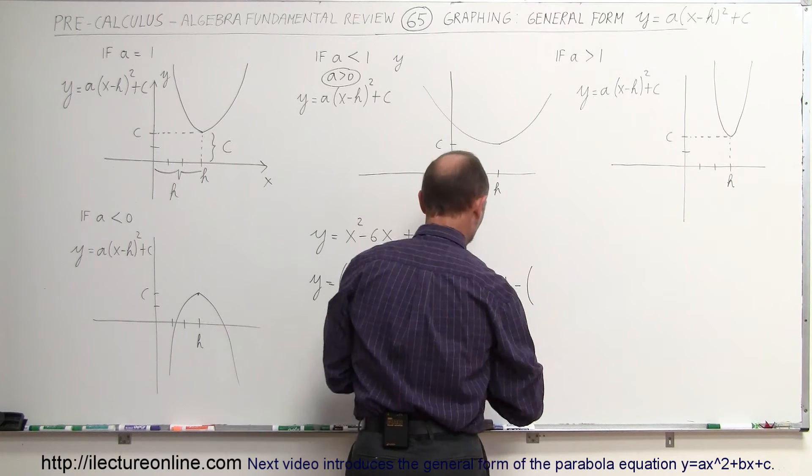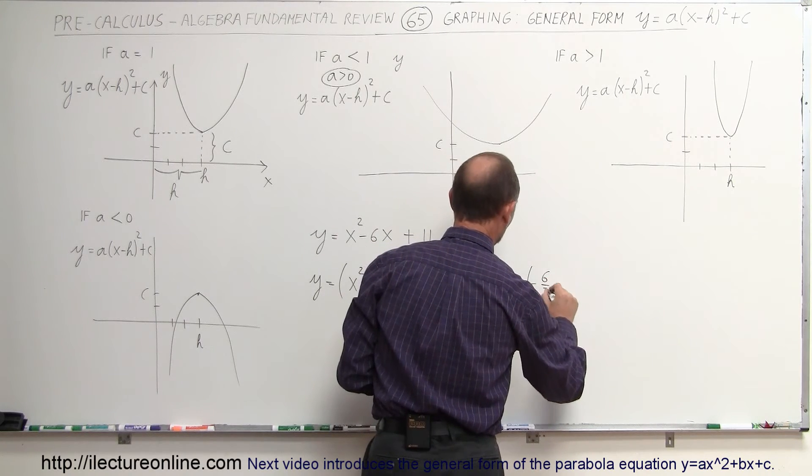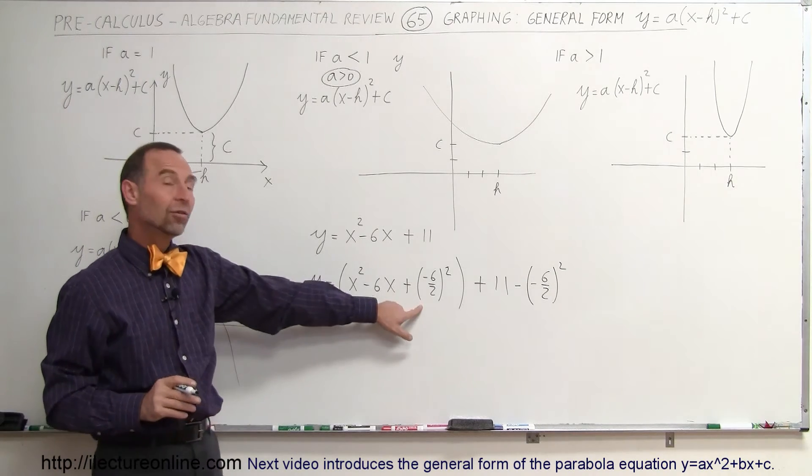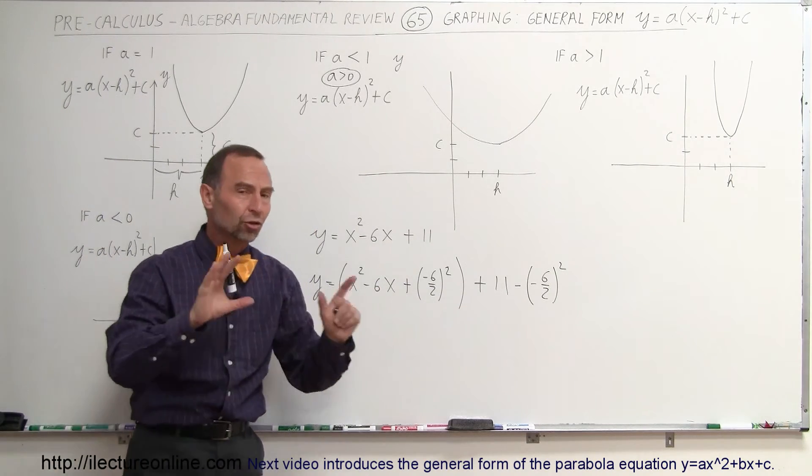Minus times a (minus 6 over 2) quantity squared. Do it properly. So we add it here, and then we subtract it again, so we don't change the equation.